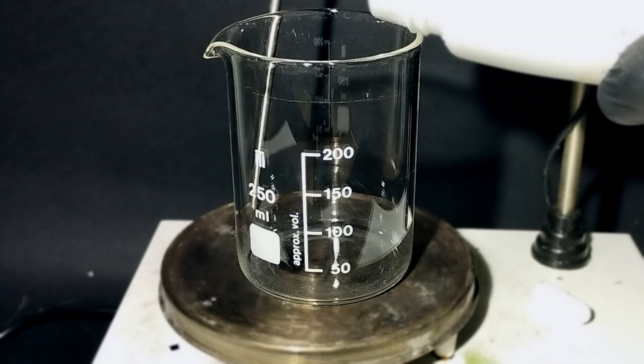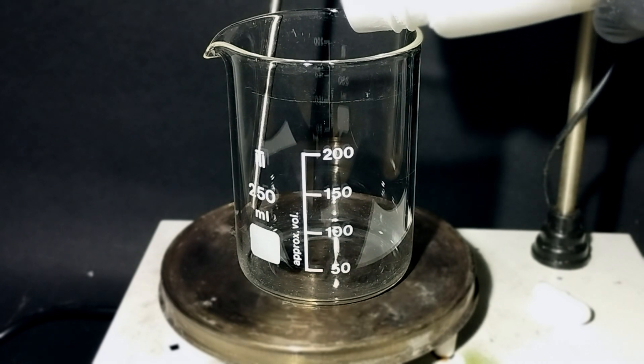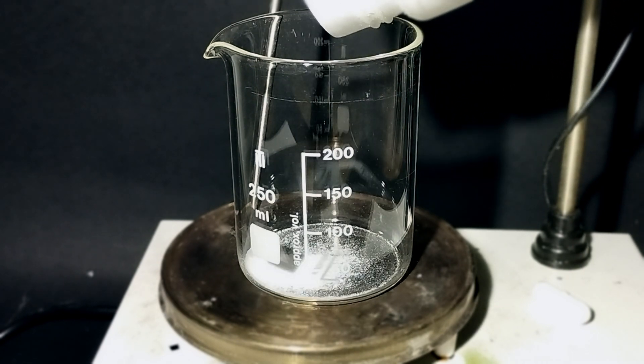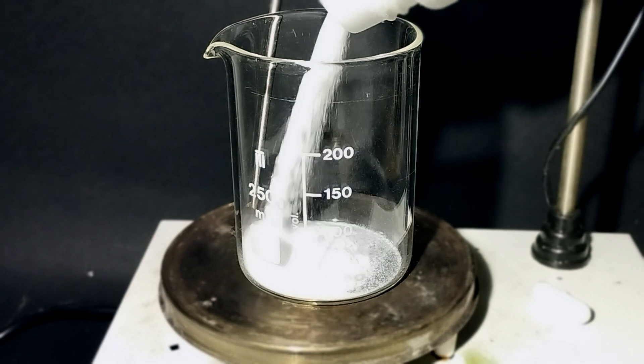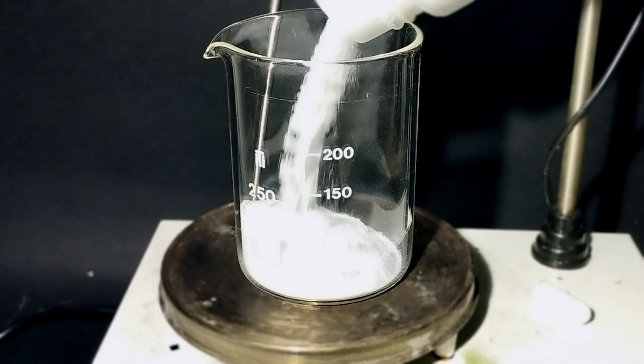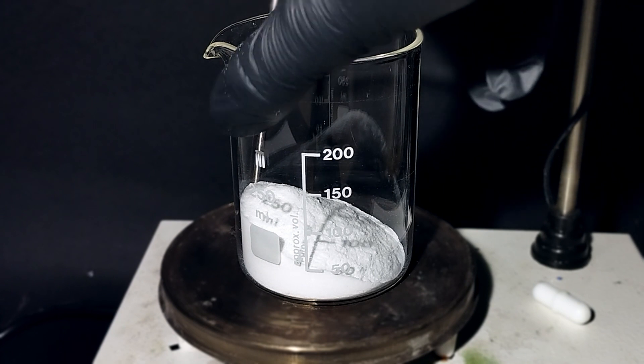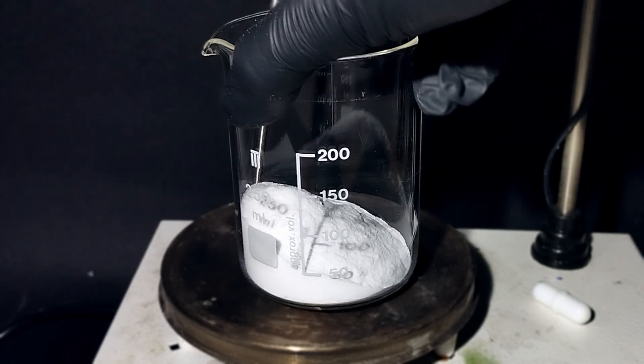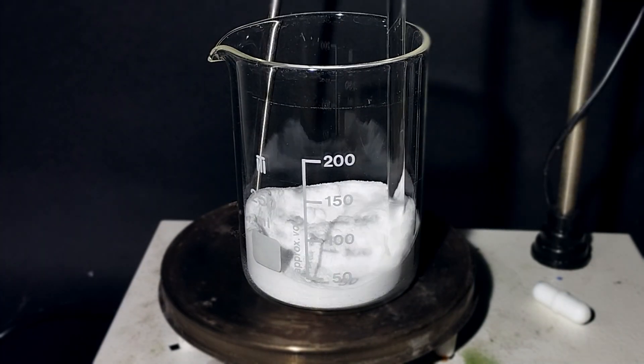Before we begin, I want to mention if you don't have sodium carbonate like me, you can easily make it from sodium bicarbonate. So first, I added a random amount of sodium bicarbonate because I will measure it later. Then I turned on the heating to 200 degrees and started to stir. The procedure is easy as that.